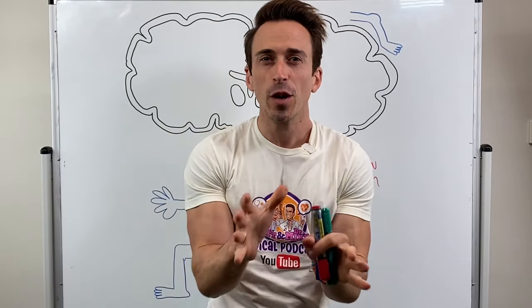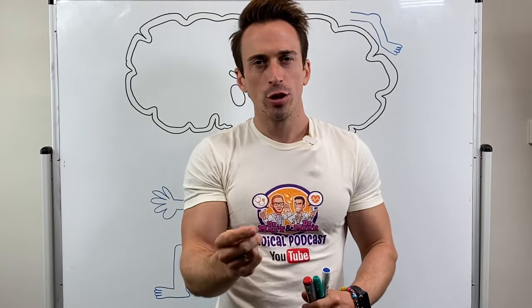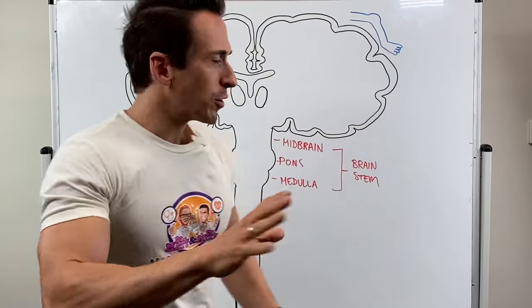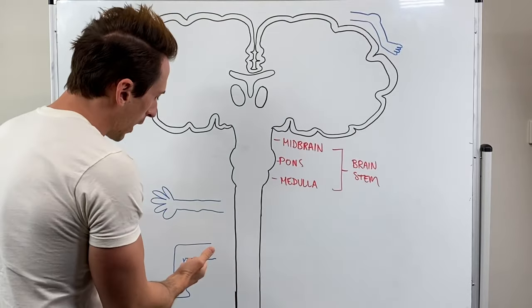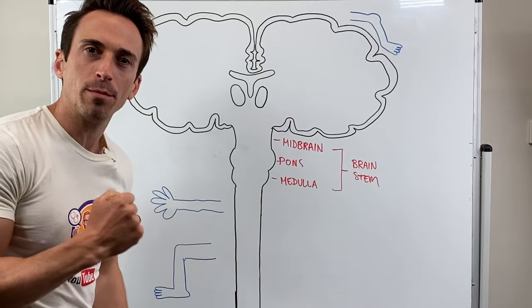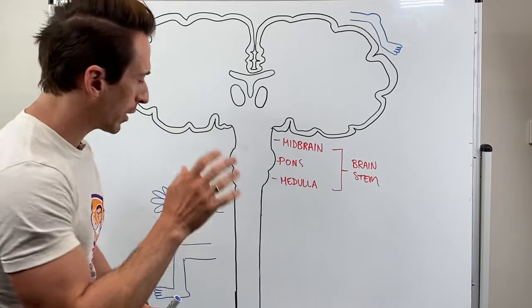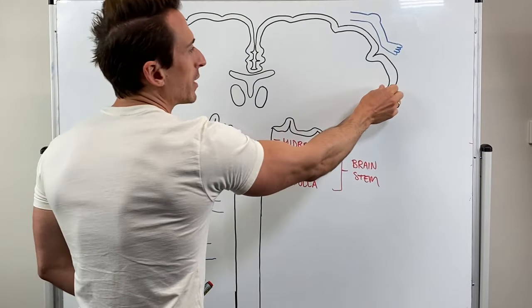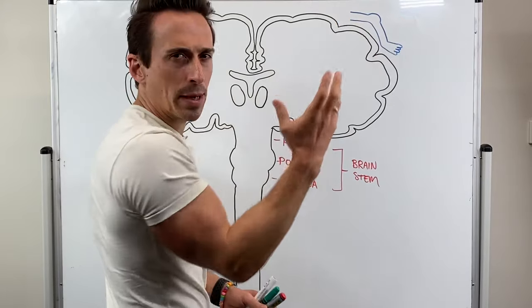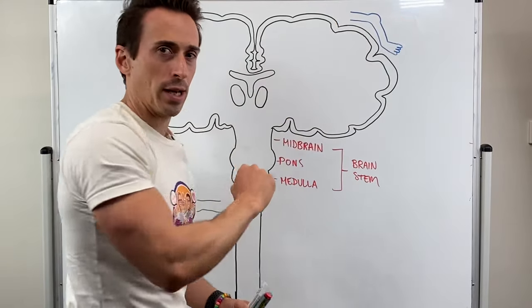Hi everyone, Dr. Mike here. In this video I want to talk to you about motor neurons, reflexes, and damage to motor neurons. The first thing we need to talk about is how does, as an example, our leg contract? We want the muscles of our leg to contract so we can tell that leg to move. Well, it all begins up in the brain, specifically in the cortex, the outer few millimetres of the brain.